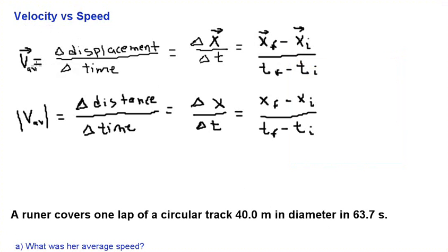Okay, so average velocity is the change in displacement over the change in time, and average speed is the change in distance over the change in time. The formulas are the same, if you notice, they're the same exact formulas. The only difference is the definition and how you apply them to a problem.